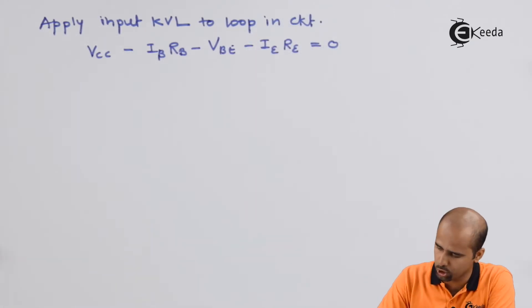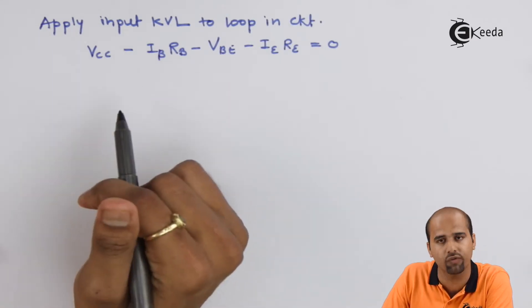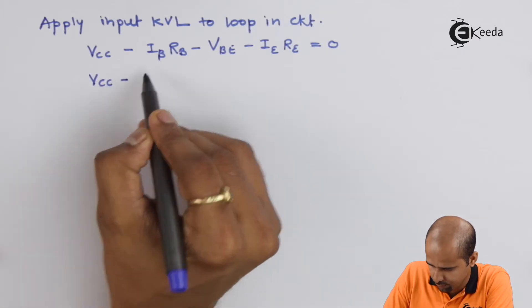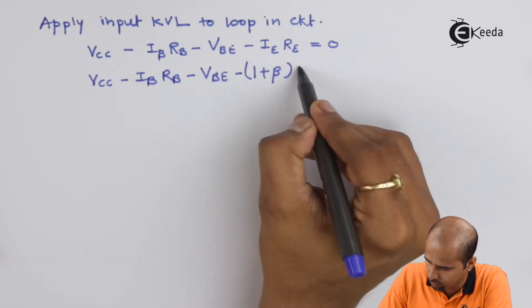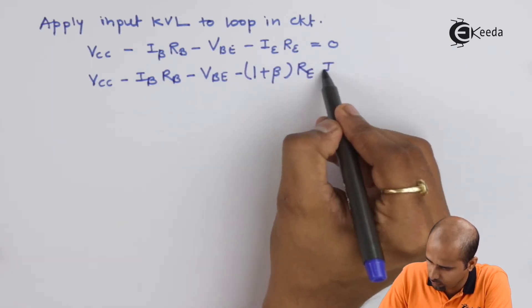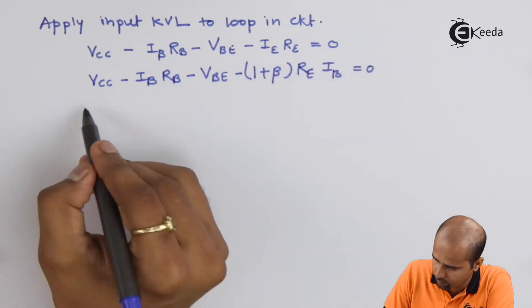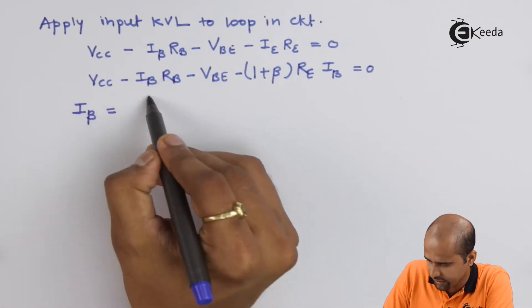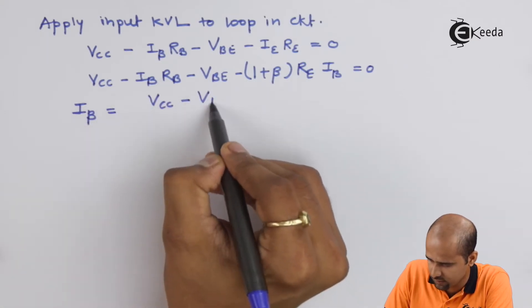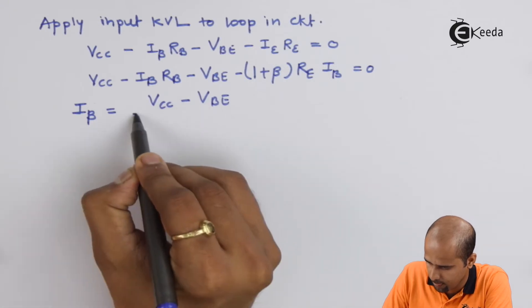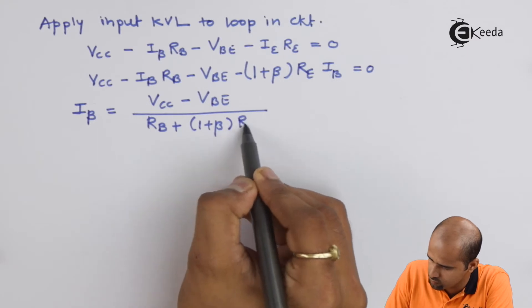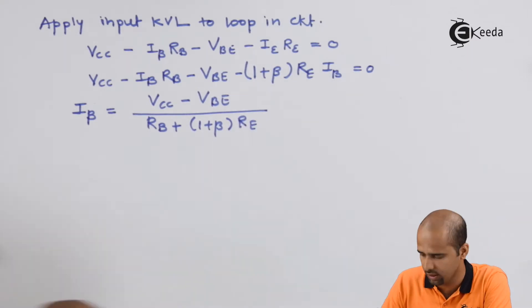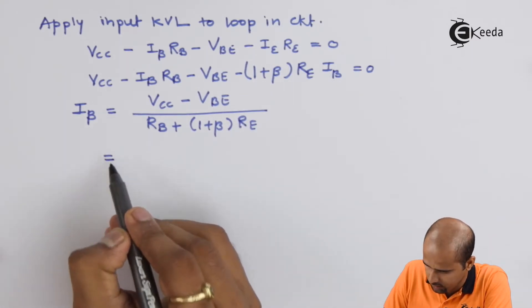This is your equation of input KVL and from which we will have to move further for the finding of IB. So we will get one formula that is VCC minus VBE divided by. And now we will apply these values.